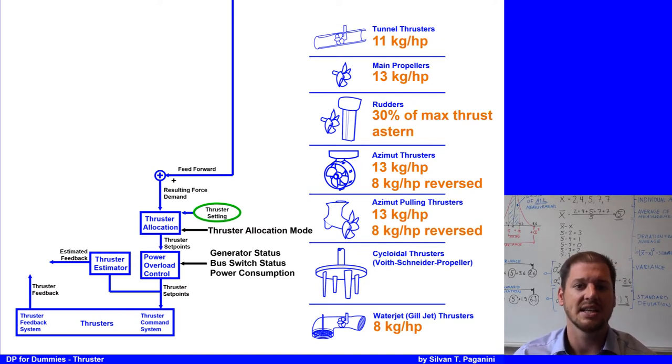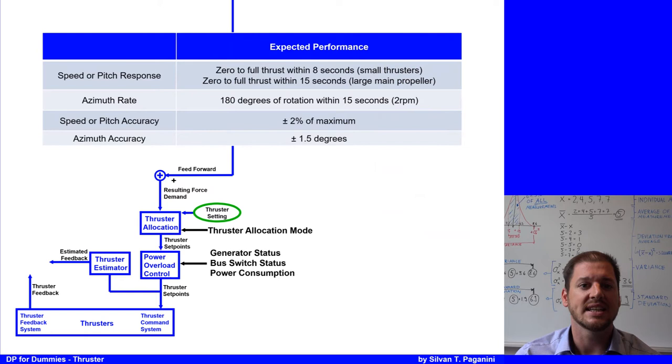To the thruster response and accuracy, a DP control vessel can only function if the thrusters respond promptly and accurately. Either slow response or inaccurate setting can cause the vessel to oscillate. The following tables indicate usual acceptable performance levels. Like the speed from a thruster from zero to full thrust should be around 8 seconds for a small and 15 seconds for a large thruster. The azimuth thruster is expected to turn with around 2 degrees per second.